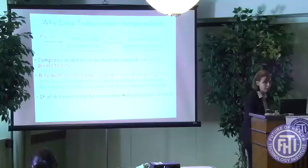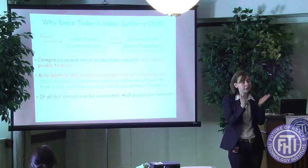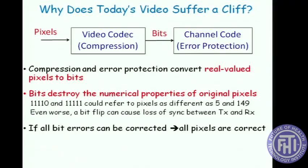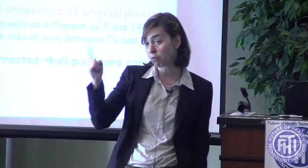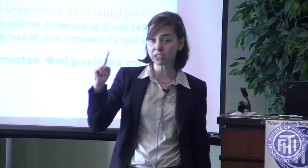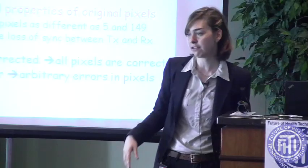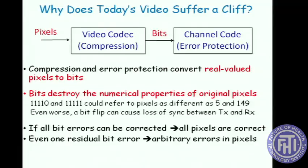Today we have a video system such that if the receiver can correctly decode all the video bits, you get perfect video — you get the leveling off. But if the receiver, after decoding, has even one residual bit error, you can get arbitrary errors in the received video. This is why you get the cliff effect.